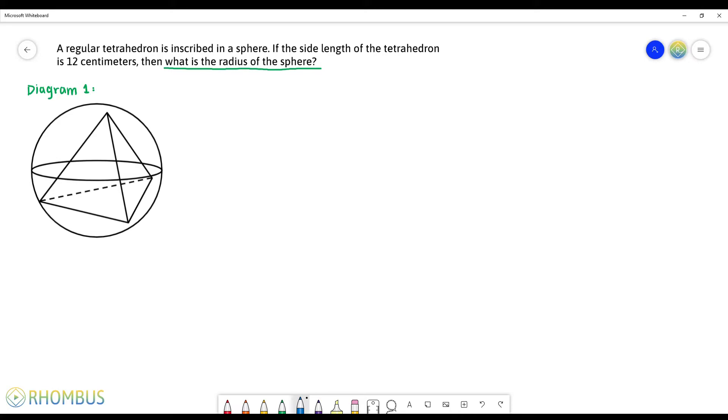So let's first mark down what we know. We know that the edge length of the tetrahedron is 12 centimeters. The problem also states that it's a regular tetrahedron, which means that all the edges on the tetrahedron are 12 centimeters as well. And that's the only thing we know.